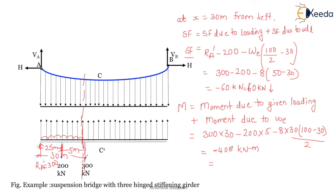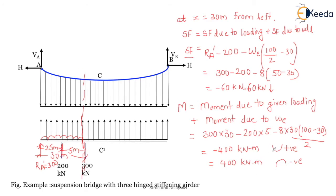As per our sign convention, if sagging is positive and hogging is negative, this negative value means hogging. We can express it as positive 400 kN·m hogging.